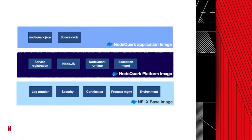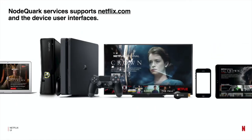When we release a platform version, we're actually publishing a Docker image with the Node Quark platform runtime. When a customer publishes a new version of their service, we layer those images, copying their application code into the platform image. We, as a platform, are responsible for monitoring and mitigating issues with the running process. When the application image is deployed, the service is ready to receive production traffic. This model allows client teams to build applications that serve huge amounts of traffic and support 182-plus million subscribers.